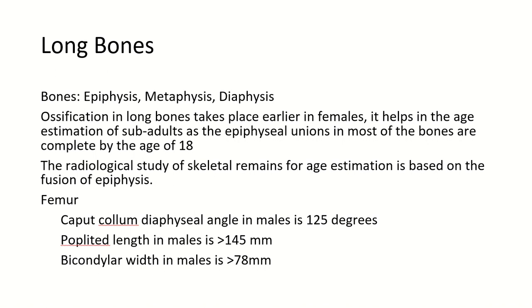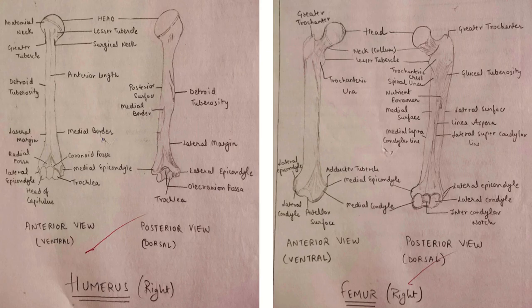To distinguish male from female there are certain characteristics. The neck-shaft angle (caput-collum-diaphyseal angle) in males is 125 degrees. The popliteal length in males is more than 145 mm. The bicondylar width is more than 78 mm.